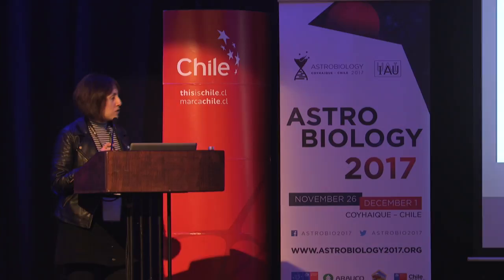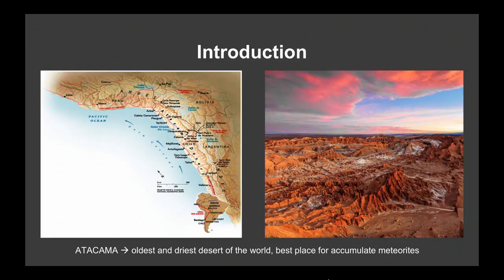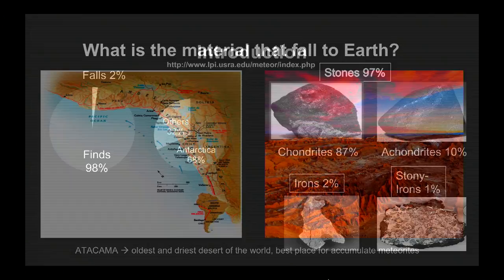Most of the material that falls to the Earth comes from meteorites that you can find, and these come from falls — that means cases where you can witness meteorites falling. Most meteorites come from Antarctica, and the other part come from desert zones like the Atacama Desert.